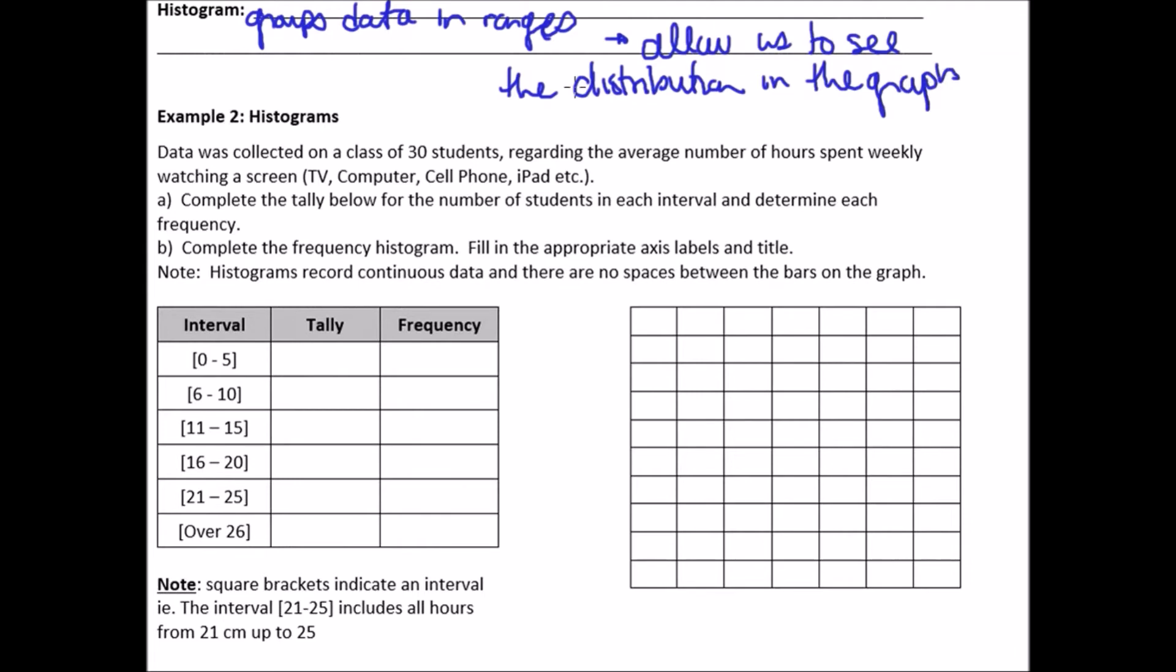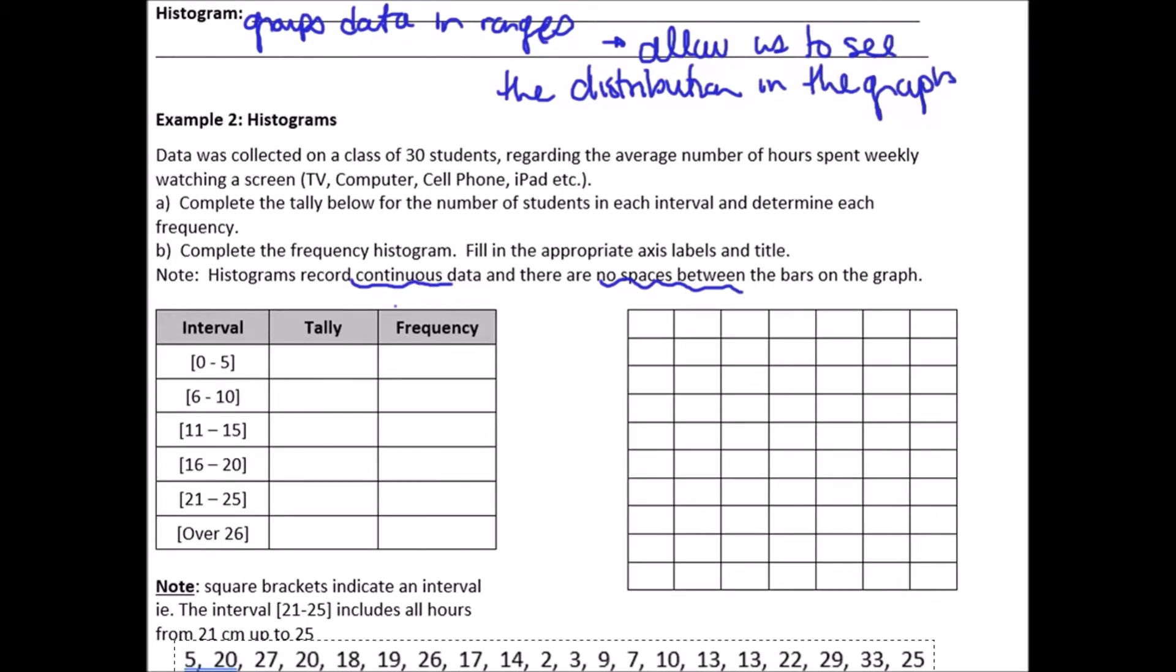Okay. So let's go straight into an example. And just one more thing. Histograms allow us to see like the shape of the graph or like the distribution in the graph. Okay. So example two histograms. Data was collected on a class of 30 students regarding the average number of hours spent weekly watching a screen. So whether that screen be a TV, a computer, a cell phone, an iPad, et cetera, complete the tally below for the number of students in each interval and determine the frequency.